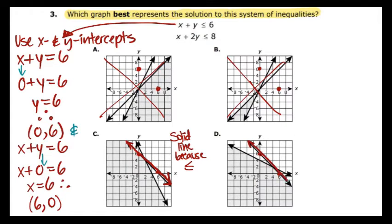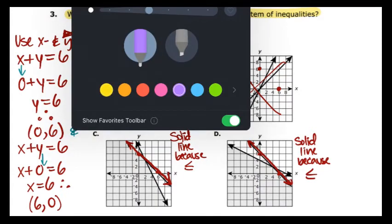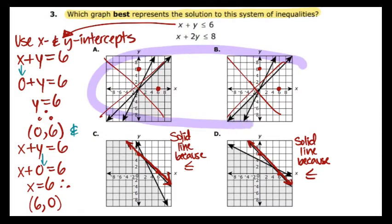Now for option D, it also has (0,6) and (6,0). Again, it's a solid line because it's less than or equal to. So everything is panning out correctly so far. Out of four options, we are down to two. I'm going to remind you that on your test, if you want, you can just take a big circle and cross out the ones that you don't have to look at anymore. That way I know I can just focus my attention to the two remaining options.